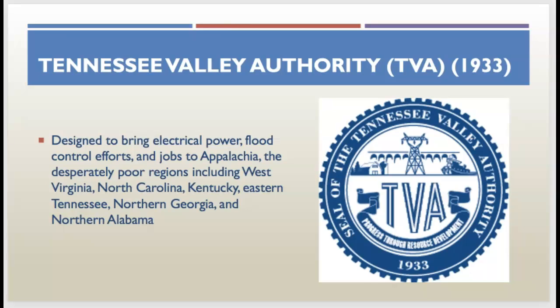With the First New Deal, not everybody was satisfied. Most critics argued it was overexpanding government and that FDR was becoming a dictator rather than acting as a president. But there were also attacks from the left — from progressives — who argued that FDR was actually not doing enough.